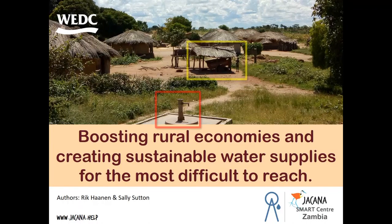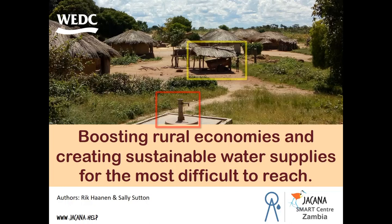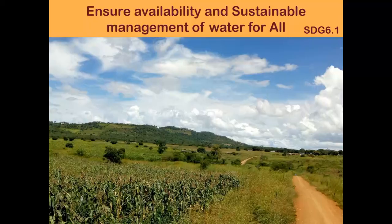My name is Rick Hanen and I want to tell you a little bit about what we've learned from this picture. We've learned something about boosting rural economies and creating sustainable water supply for the most difficult to reach. Now let's have a look at Sustainable Development Goal number 6, where we have to ensure sustainable water for everybody.